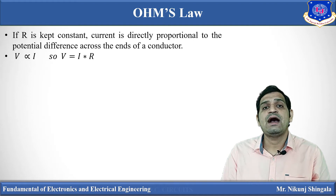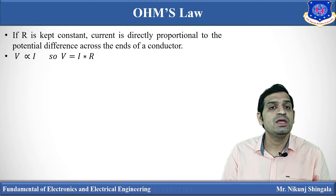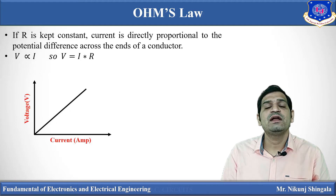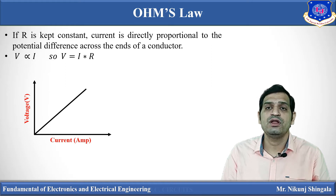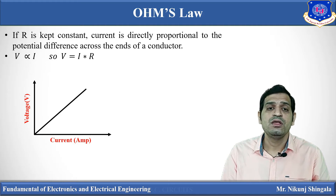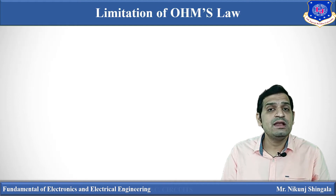If R is kept constant, current is directly proportional to the potential difference across the ends of the conductor. So V is proportional to I, and we can write V equals IR. A graph shows the relationship between voltage and current for a resistor under constant temperature — the graph is linear: as current increases, potential difference across the resistor increases.